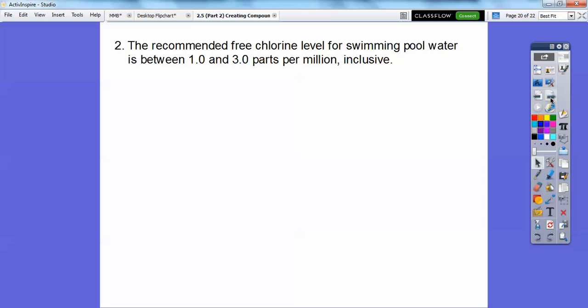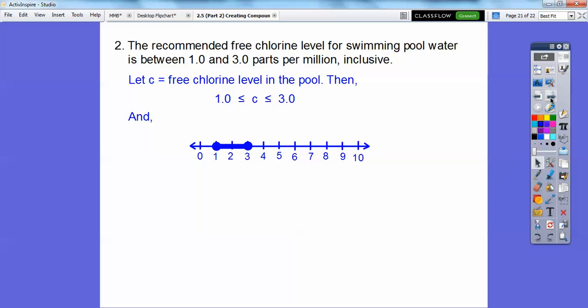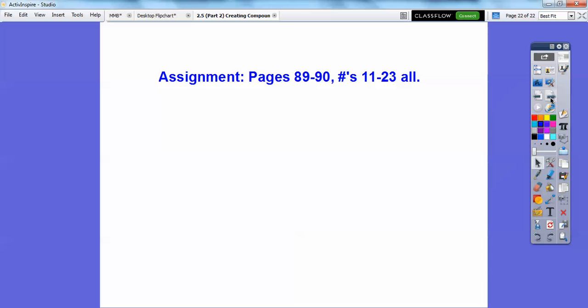Here's another one here, you guys. The recommended free chlorine level for swimming pool water is between 1.0 and 3.0 parts per million, inclusively. So, that means we're going to have closed circles, including them. There's our answer right there. Easy enough. I told you this was easy. All right, if you're in my class, I would assign that for your homework. Take care, you guys.